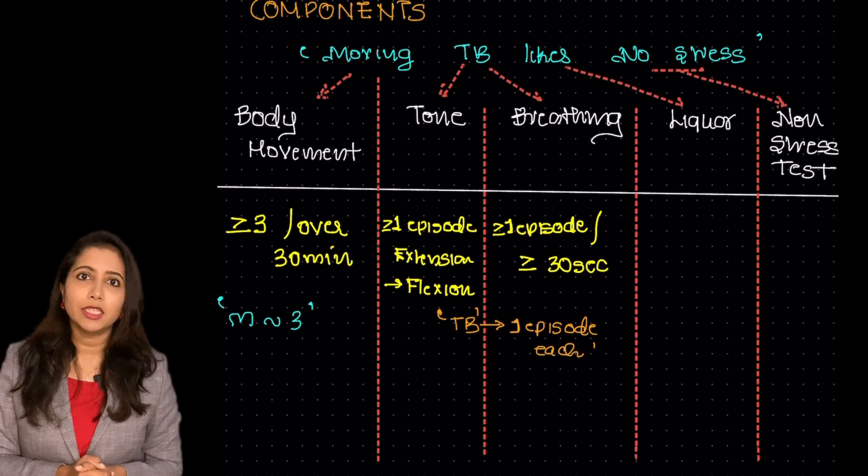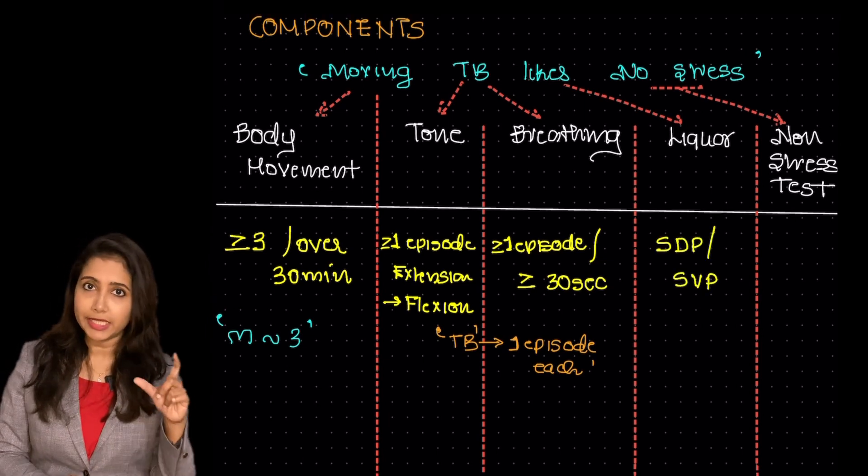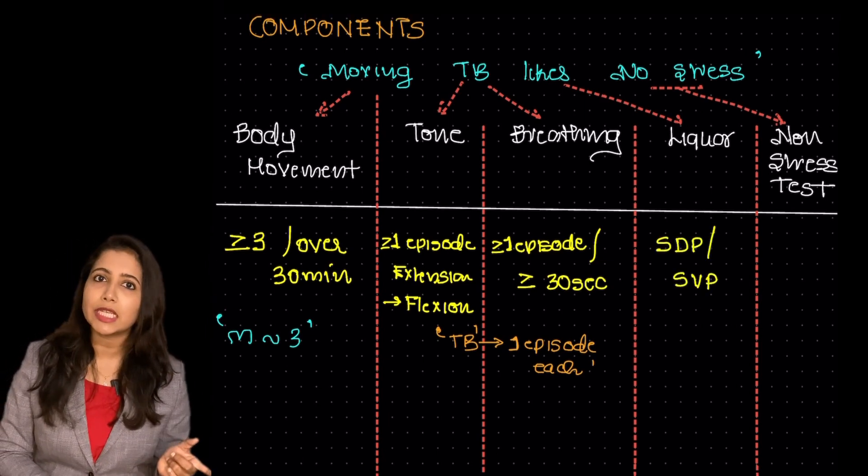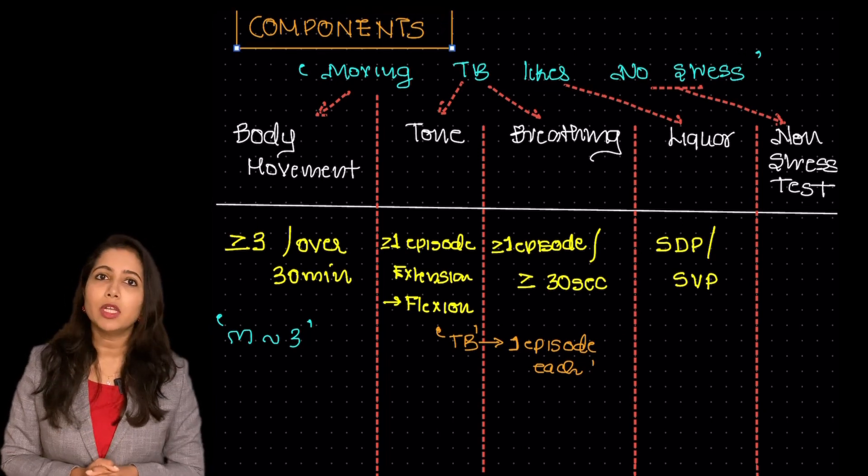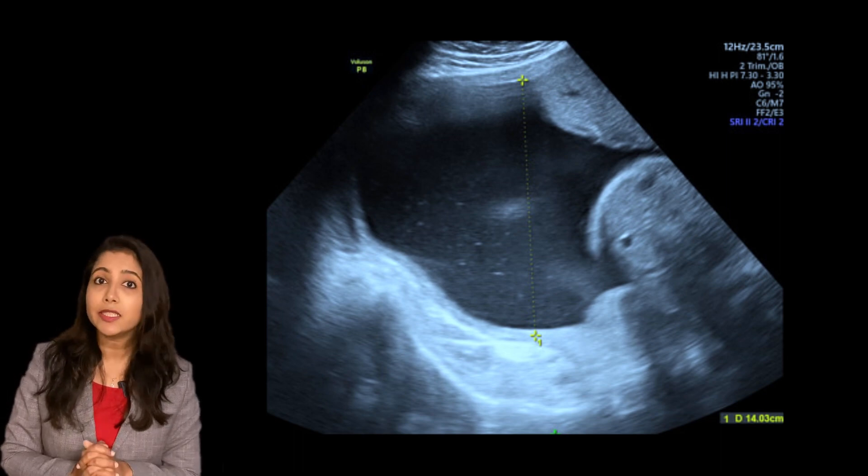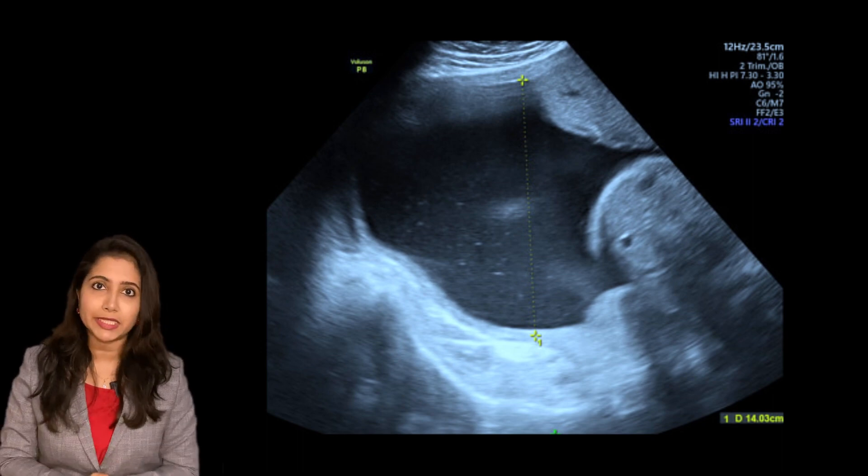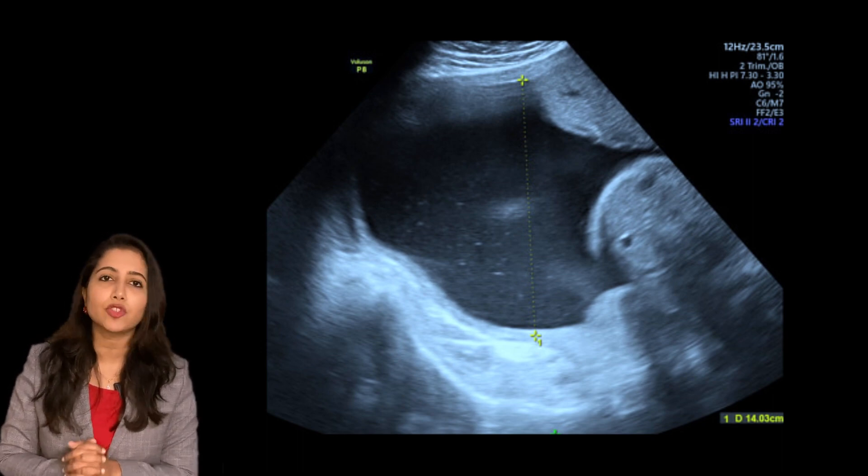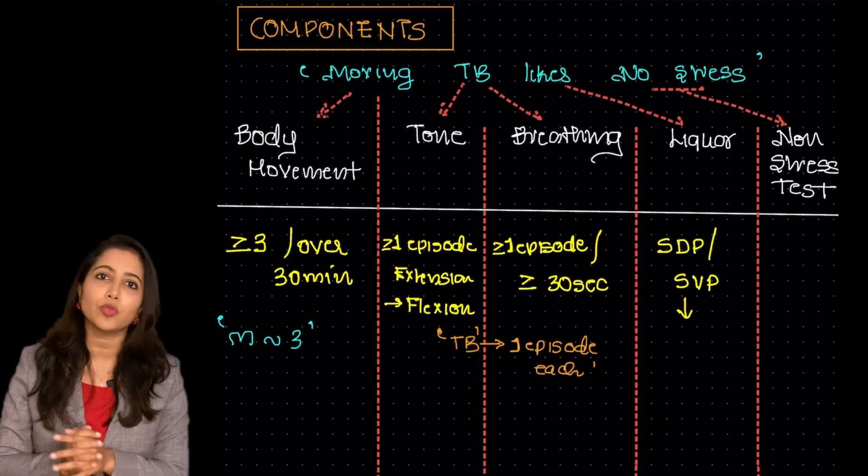Regarding the liquor, so the liquor is measured in terms of single deepest pocket, also known as single vertical pocket. Please have a look at this diagram. You can see that this is the single liquor pocket and it is measured in 2 perpendicular planes, 2 perpendicular planes and each should be at least 2 cm. So if it is normal, it will be 2 into 2 cm.